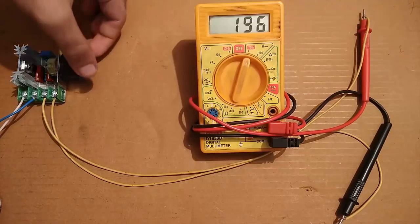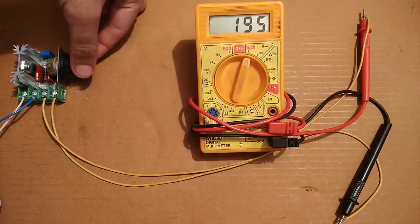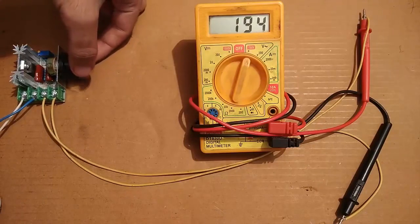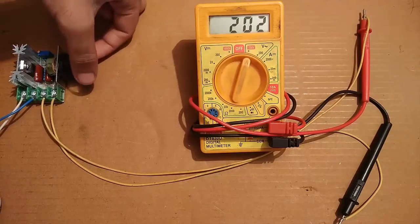I am carefully increasing the voltage by rotating the knob. You can see that the voltage is increasing, and it jumped from 196 to 203 volts.